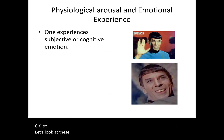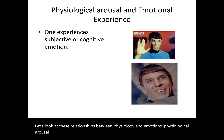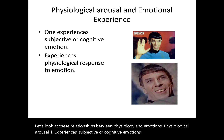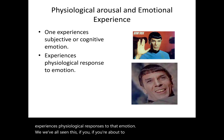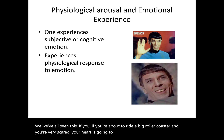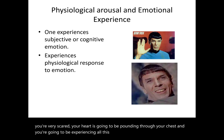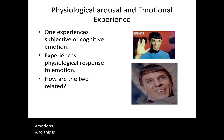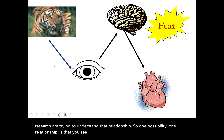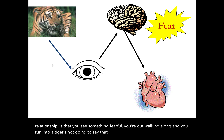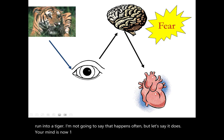Physiological arousal is key to emotions. When we experience an emotion, we also experience physiological responses. If you're about to ride a big roller coaster, your heart is pounding, hands get clammy, teeth grit — all physiology that correlates with the emotion. Classical theory research tries to understand that relationship. One possibility: you see something fearful, your mind registers it as something to fear, and then signals the body to prepare to deal with the stimulus.